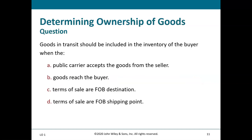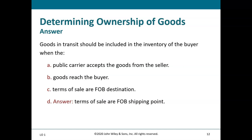FOB destination means the seller pays freight and owns the merchandise until it's delivered to the buyer's location. Question: goods in transit should be included in the buyer's inventory when the terms are FOB shipping point. While a public carrier accepting goods from the seller may be true, that alone doesn't mean it's the buyer's inventory — the terms must also be FOB shipping point.